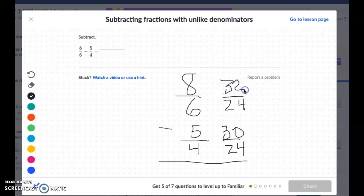And then I would say the other big thing that we have to remember is that we're subtracting, not adding this time. So 32 take away 30 is 2, and my denominator stays the same, 24.